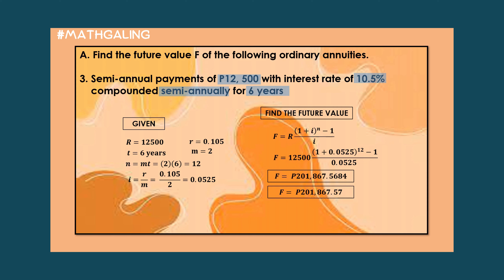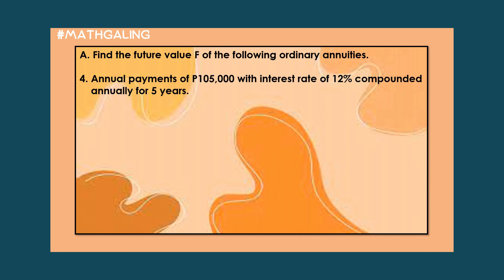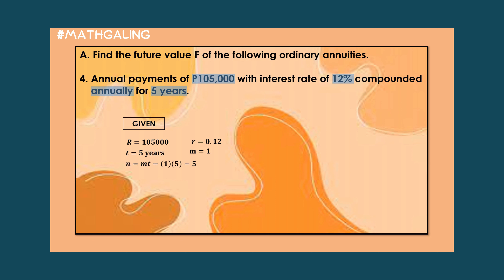Moving on to problem number 4: annual payments of P105,000 with an interest rate of 12% compounded annually for 5 years. Our capital R is 105,000 pesos. Our small r is 12%, converted to decimal as 0.12. Time is 5 years. M, or the number of conversion periods, is annually, so it equals 1. N equals 1 times 5, which is 5. I equals 0.12 over 1, giving 0.12.